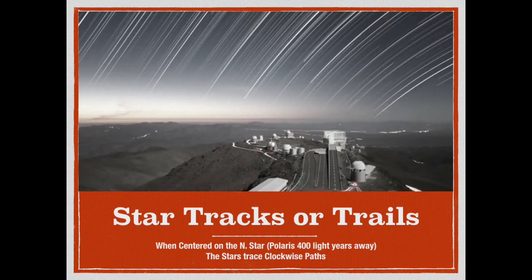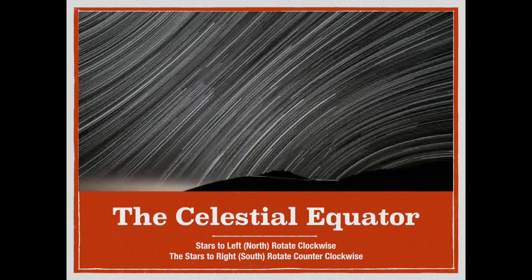Our next piece of evidence is star tracks or star trails. Basically, you center a camera on the North Star, keep the shutter open for a long exposure, and watch the stars arc through the sky. It will trace a clockwise pattern all night long. On the left we have a northern rotation in a clockwise direction, and on the right a southern rotation in a counterclockwise direction. In the middle, stars go from the top diagonally down to the bottom — that is the celestial equator. There is a link to this absolutely beautiful video in the description, but let me play a short excerpt.